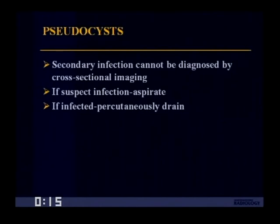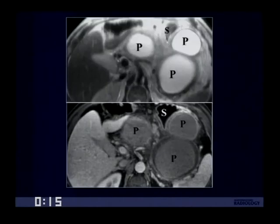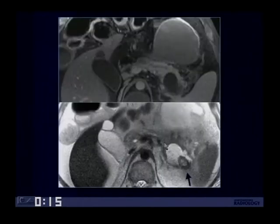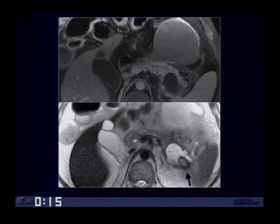Similar to necrosis, secondary infection of pseudocysts cannot be diagnosed by cross-sectional imaging unless you see gas. If you suspect infection, you should aspirate the fluid collection, and if infected, percutaneously drain it. Here's an example of a patient with multiple pseudocysts: on MR T2-weighted imaging they are bright due to fluid, and on T1 post-contrast images there is increased signal intensity due to hemorrhagic or proteinaceous material. Another patient with pancreatitis and a pseudocyst demonstrates on T2-weighted imaging the presence of internal debris within these pseudocysts.